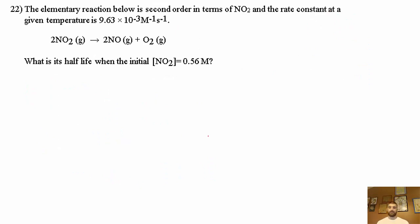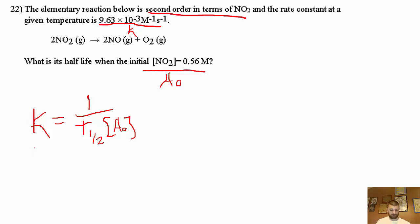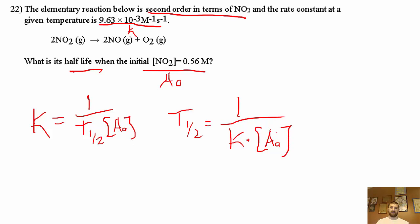Problem 22: an elementary reaction is second order in NO₂ with a given rate constant K. What is the half-life when the initial concentration is 0.56 M? Using the simplified second-order half-life equation: T½ = 1/(K·[A]0). With [A]0 = 0.56 M and the given K, plugging and chugging gives T½ = 190 seconds.